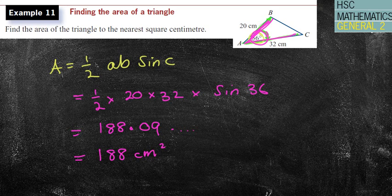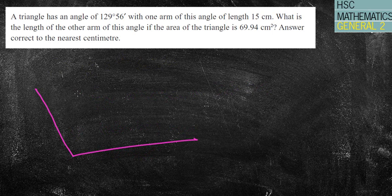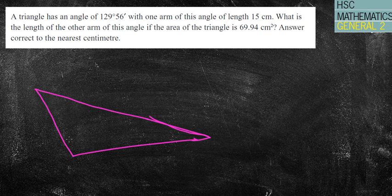I'm going to show you two other questions, just in case they pop up. This one hasn't got a diagram, so that's going to probably be the first step, drawing a non-right angled triangle. It says a triangle has an angle of 129 degrees 56 minutes, with one arm being 15 centimeters, and one arm we are looking for. It does tell us that the area of this particular triangle is going to be 69.94. Alright, so it's kind of like an equation question.